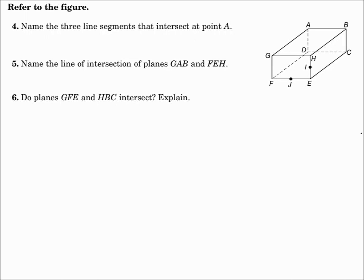Do planes GFE and HBC intersect? Well, plane GFE has points G, F, and E. That's the front face. Plane HBC has H, B, and C. That's the right face. The front face and the right face do intersect. They intersect in that line right there. And that line is line HE.